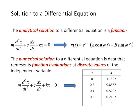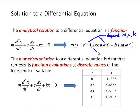The analytical solution to a differential equation is a function. Here's that spring-mass oscillator equation again. Under certain values of m, c, and k, that solution x of t would be a function e to the negative alpha t times the quantity a cosine omega t plus b sine omega t. In this solution, alpha and omega depend on the model parameters m, c, and k, and a and b depend on the initial conditions.